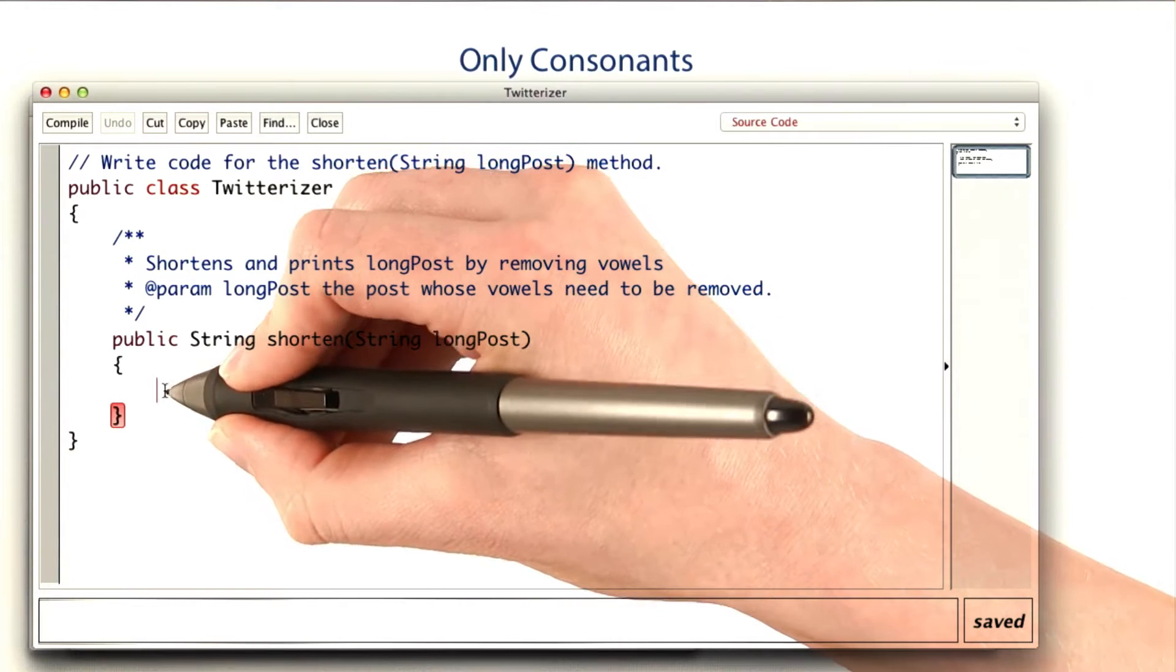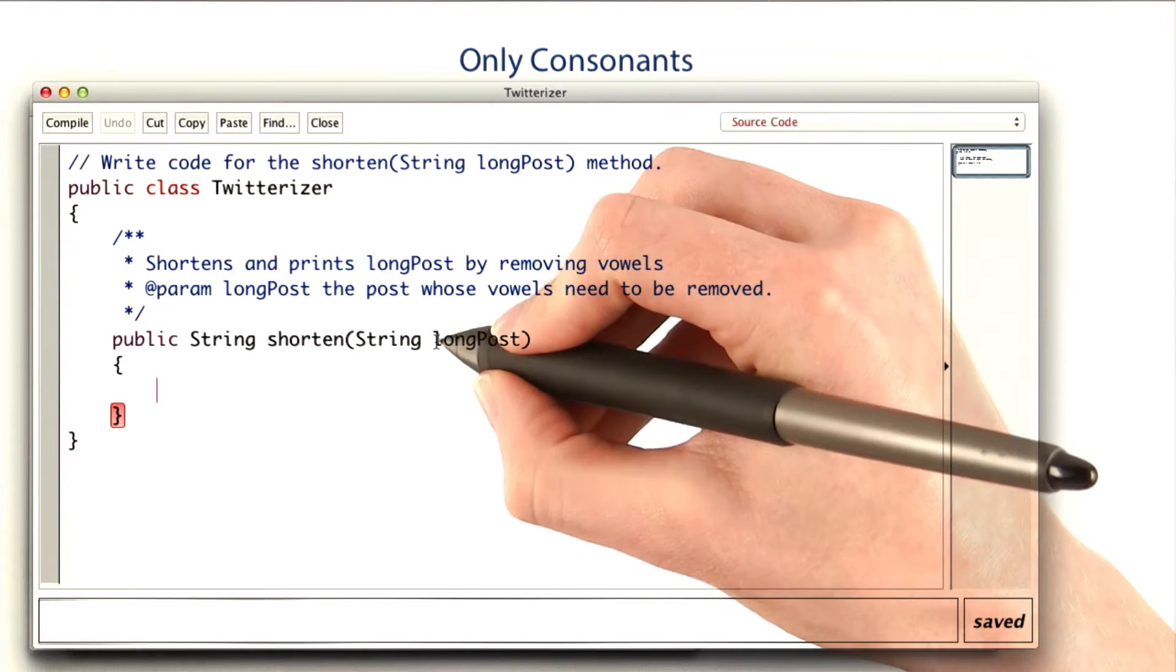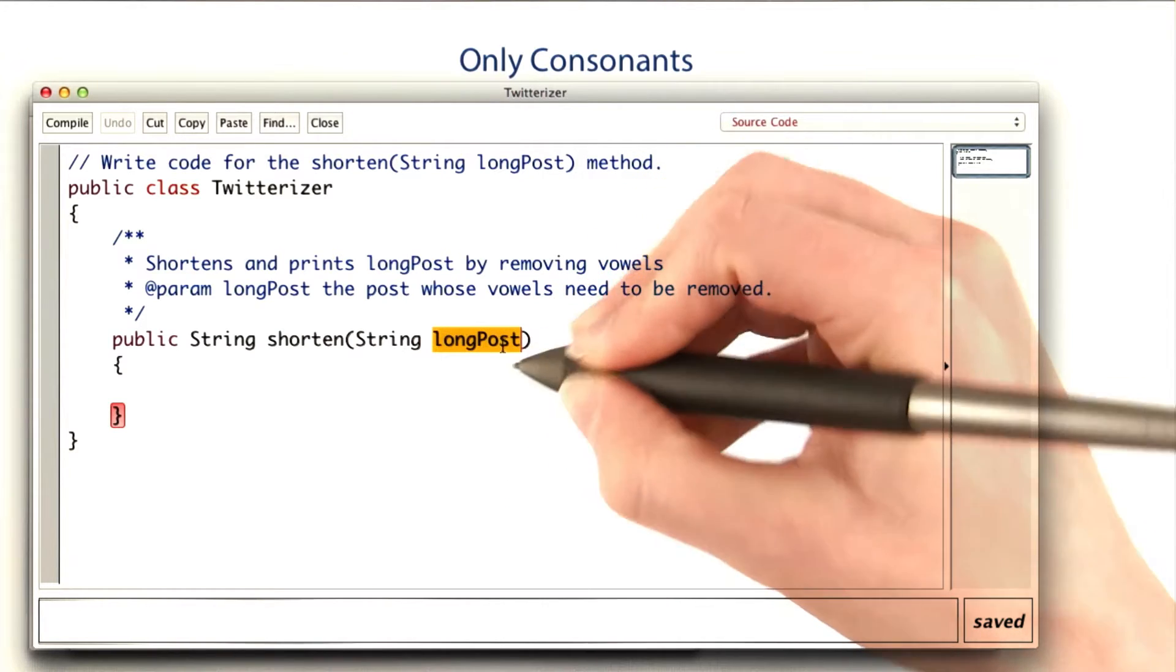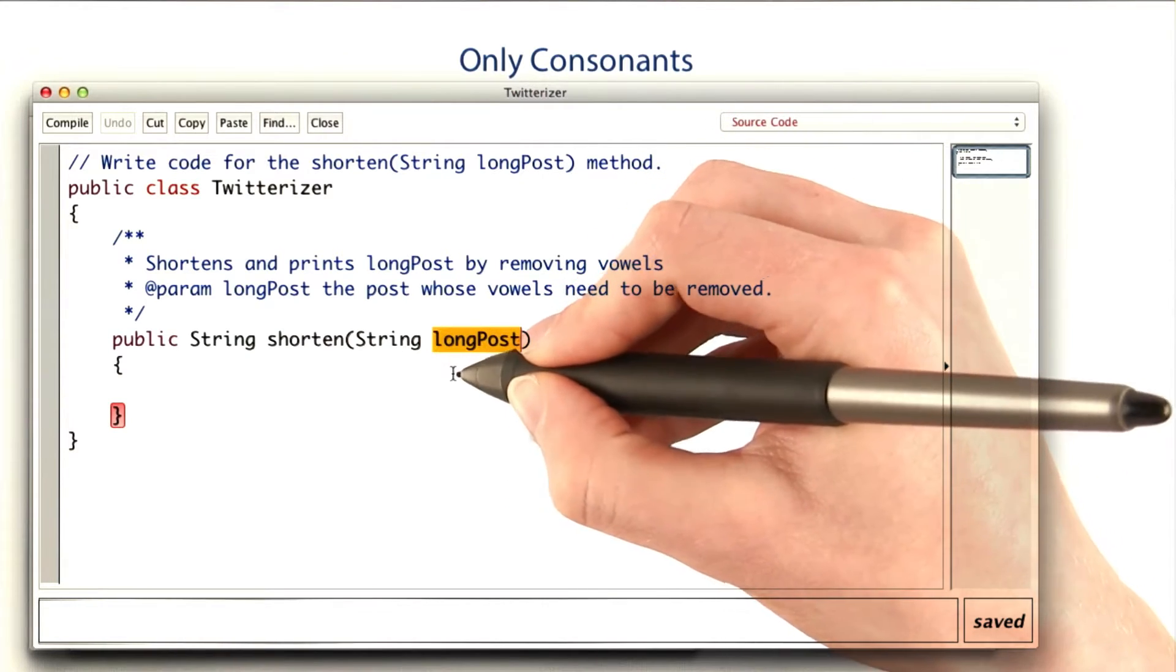I already have a tester, so I'll just start filling in the implementation. I want to go through the long post, each letter of it, and copy the consonants into another shorter post.